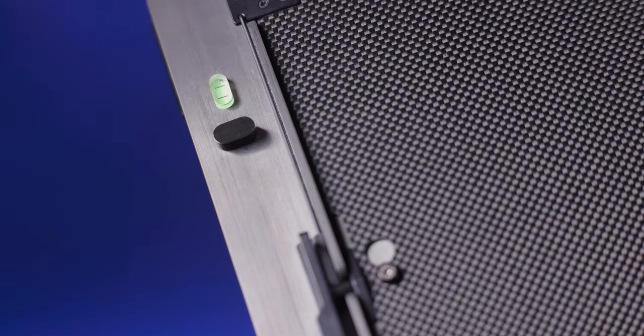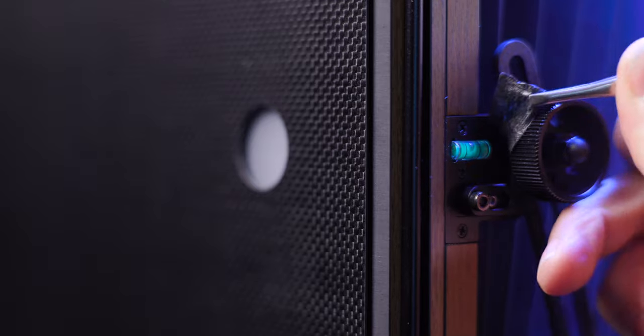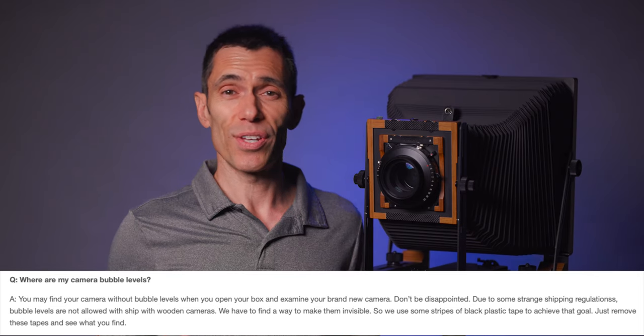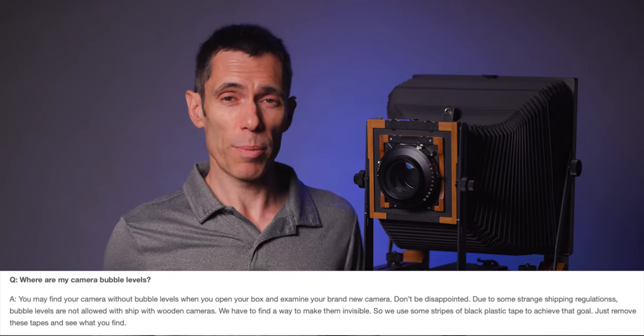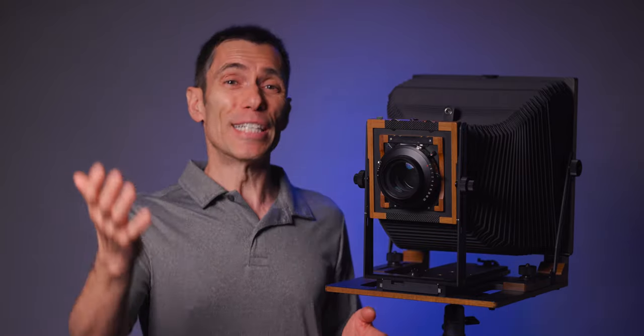This might be a good time to mention that all the bubble levels on this camera are shipped with a covering over them. Chamonix explains this on the FAQ section of their website. Apparently the combination of a wooden camera and bubble levels makes for questionable shipping. Even funnier is the fact that I didn't even notice that the bubble levels were covered until weeks later when I started wondering what all those oval-shaped black pieces were used for. Duh!